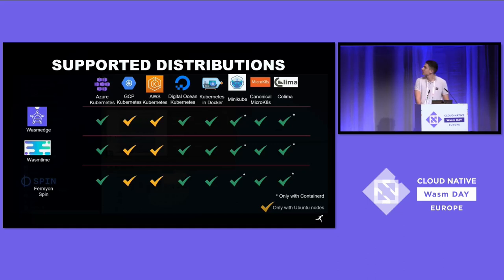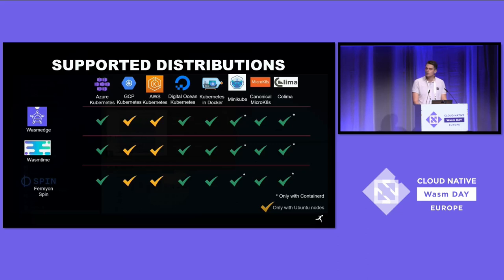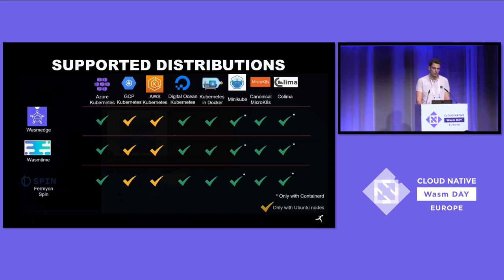There are some limitations as you can see in this table. For example, for minikube and Colima it's required that containerd is used. As you can also see with the yellow arrows for GCP and AWS, when you create your cluster you need to configure your nodes or the cluster to be running Ubuntu and containerd, so it will only work with Ubuntu nodes for these cloud providers.